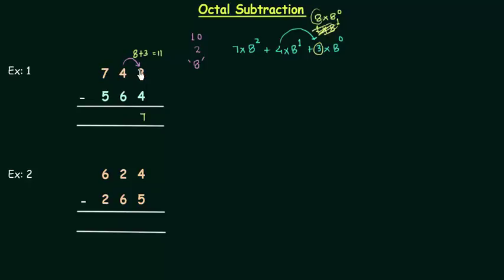As this 4 has given the borrow, we have 3 now. 3 minus 6, again we have to take borrow from the next position. So we have 8 as the borrow and plus 3 will give us 11 again. 11 minus 6 is 5.